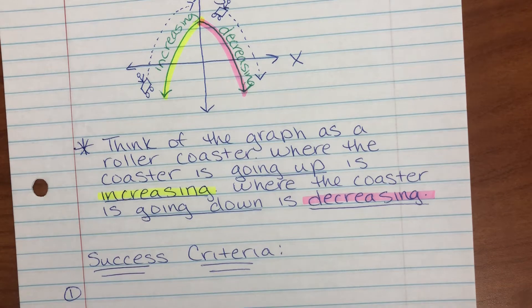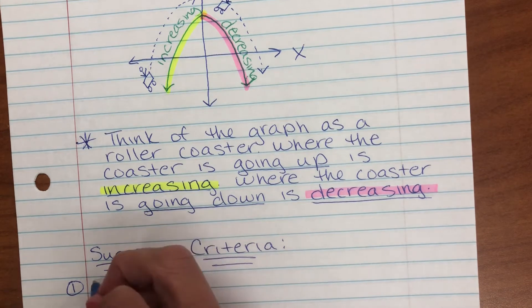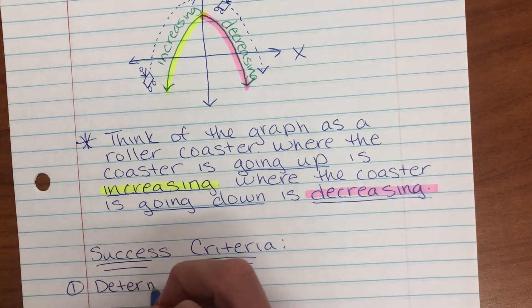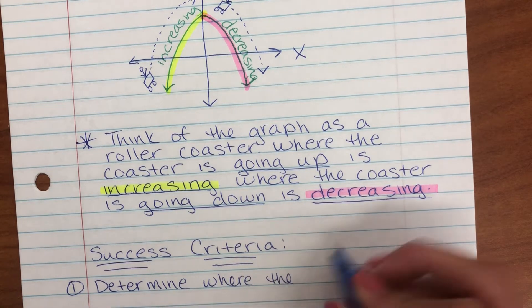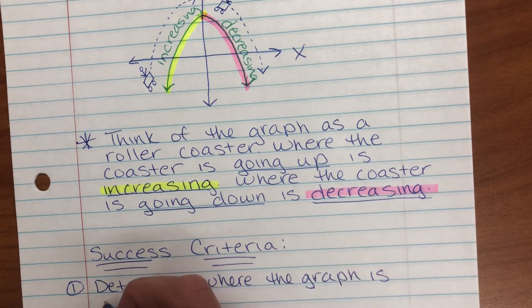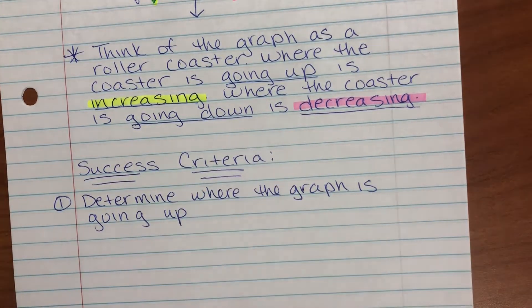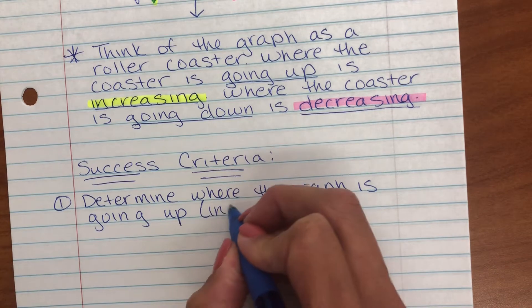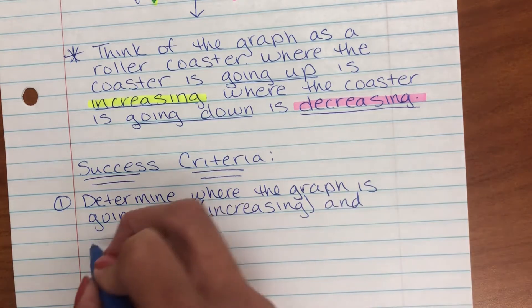Let's talk about some success criteria here. The first thing you want to do is determine where the graph is going up and going down. Determine where the graph is going up, that's increasing, and going down.